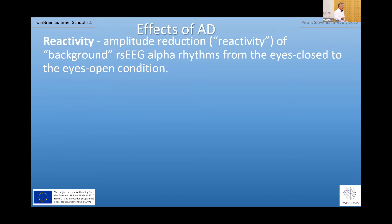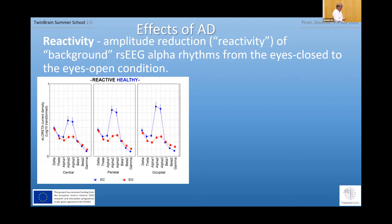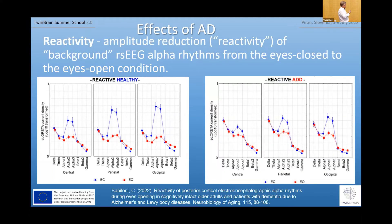One useful measure for distinguishing normal subjects from Alzheimer's disease patients using spontaneous EEG is so-called alpha reactivity. Alpha reactivity relates to the amplitude reduction of background resting EEG alpha from eyes-closed to eyes-open. This has been developed by Klimesh. There is a publication from Babiloni — Claudio Babiloni from Rome, who is the biggest expert in Europe in this field using this approach.